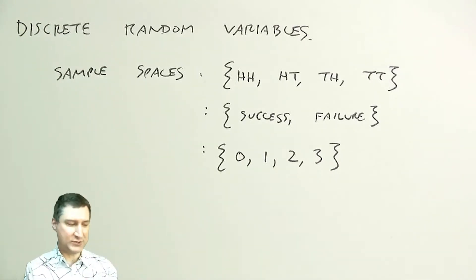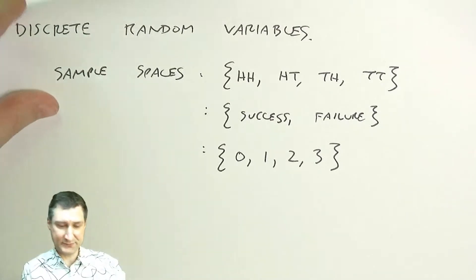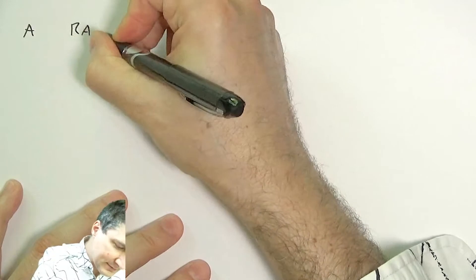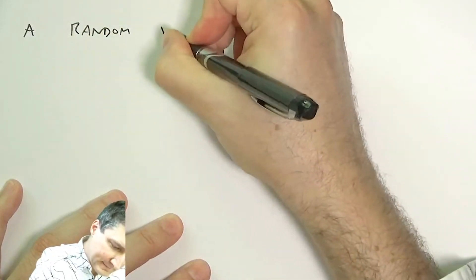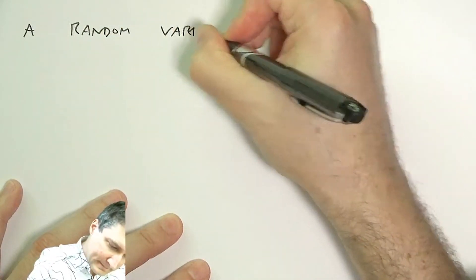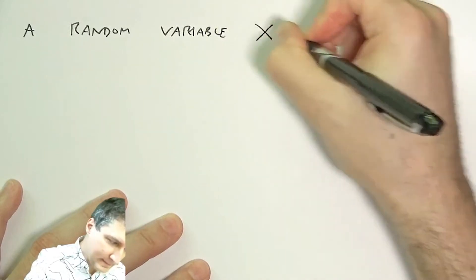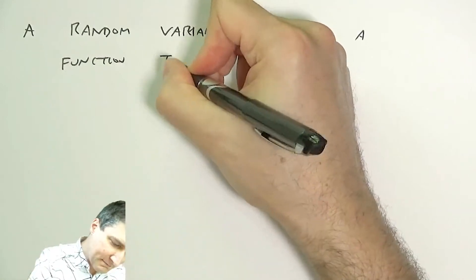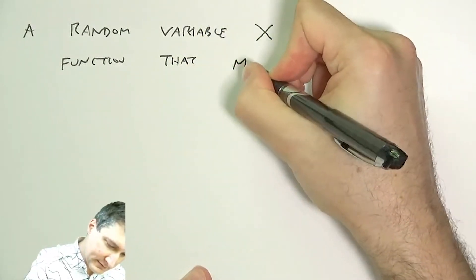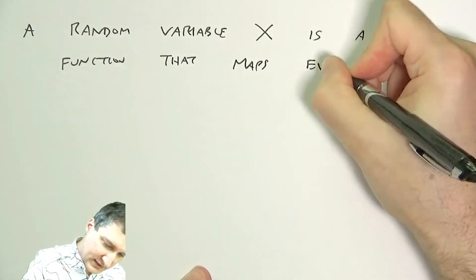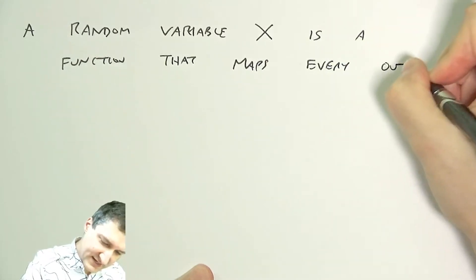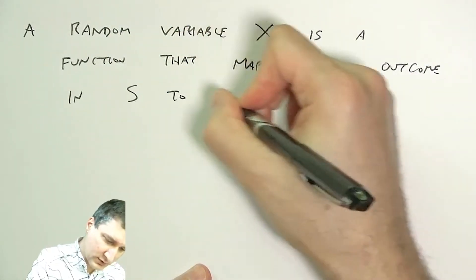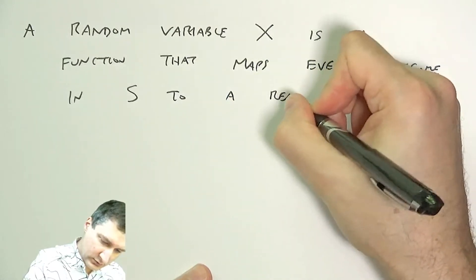This idea of turning everything into a number is what's called a random variable. So let's define that: a random variable X is a function that maps every outcome in the sample space to a real number.